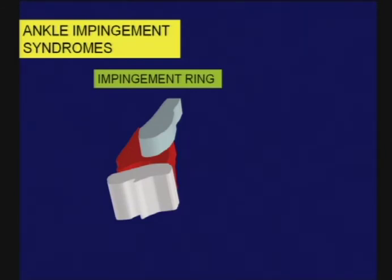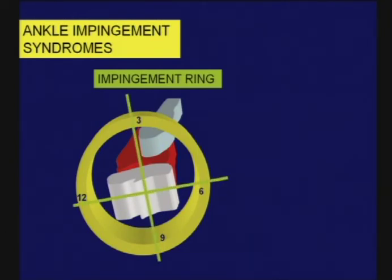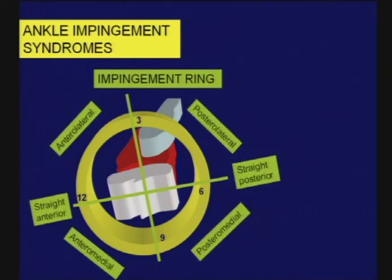Trying to put all this together: ankle impingement syndromes are a clinical diagnosis supported by MR imaging findings that may indicate the source of the impingement. There are no definitive features, however — the only exception perhaps being the talar edema we see with posterolateral ankle impingement. I think of this like an impingement ring: we can draw a ring around the ankle joint and number the hours, with anterior at 12, posterior at 6, lateral at 3, and medial at 9, allowing us to see the various quadrants around the ankle joint.